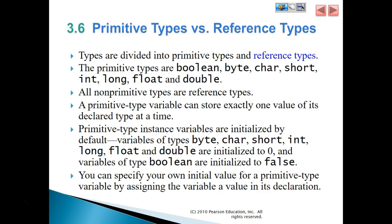Variables of type byte, char, short, int, long, float, and double are initialized to zero, and variables of type boolean are initialized to false. You can specify your own initial values for a primitive type variable by assigning the variable a value at its declaration.